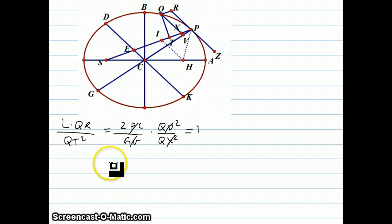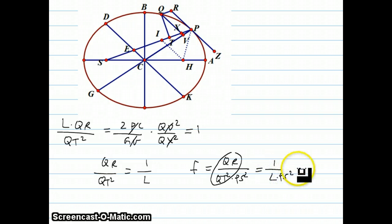We can rewrite this as QR over QT² equals 1 over L. He also proves that force equals QR over QT² times PS². But since QR over QT² equals 1 over L, this becomes 1 over L times PS². Since L is a constant, the force is proportional to 1 over PS², which is the famous inverse square law.